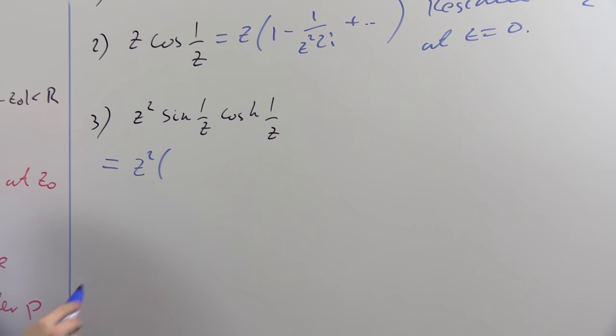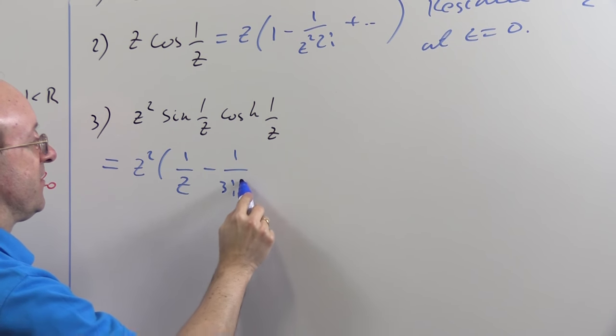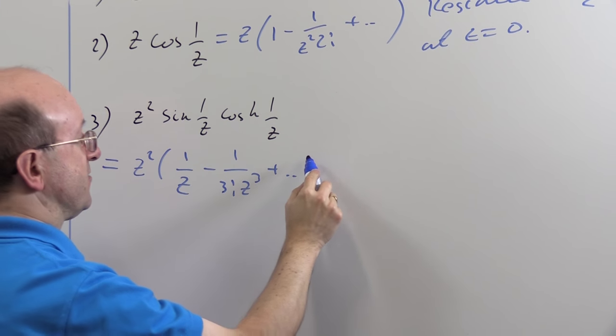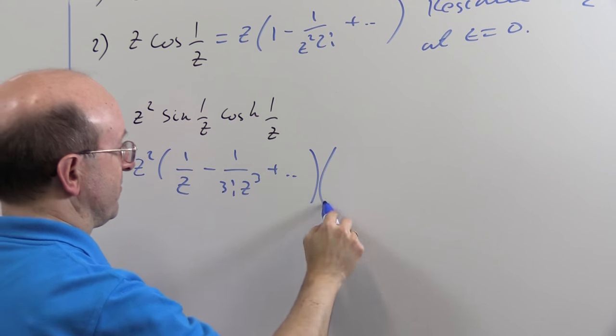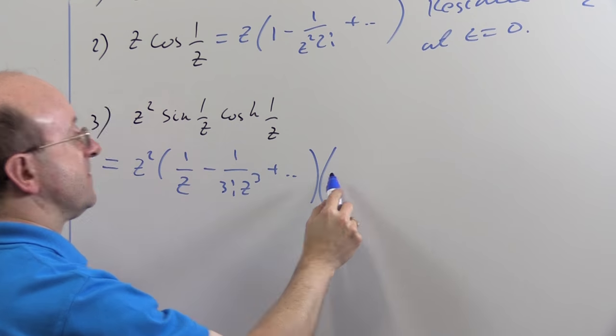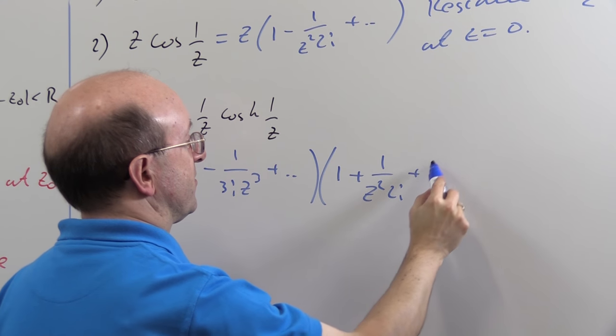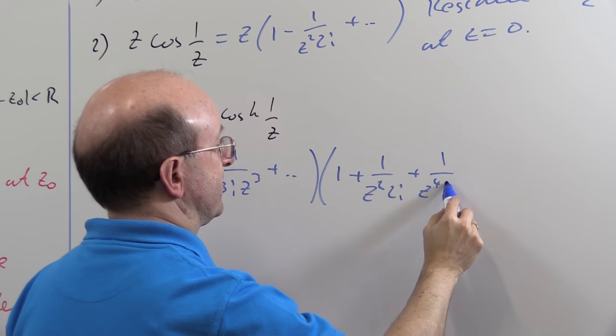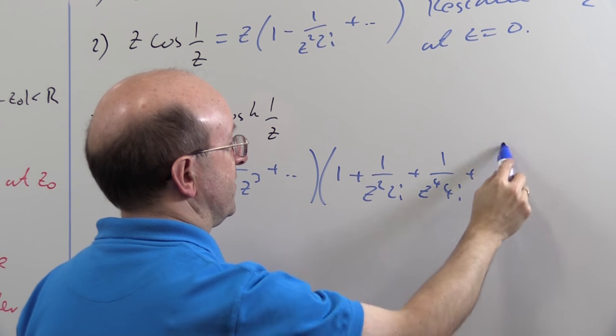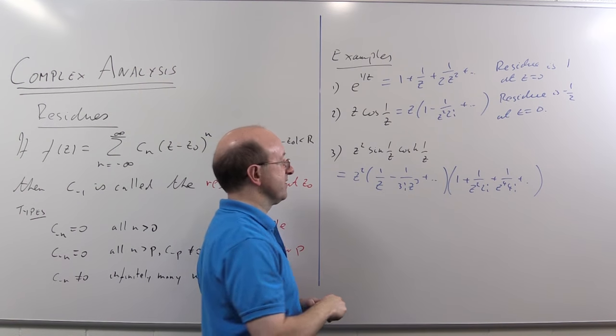We get z² into... well the series for sine begins... well 1/sin here: 1/z - 1/(3!z³) + and so on. In fact I know I won't need any more than that. The series for cos: 1 + 1/(z²·2!) + 1/(z⁴·4!) ... As long as z is not zero that will be convergent.